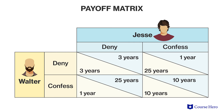The possible outcomes for this game can be shown using a payoff matrix displaying the prisoners' two choices: to deny the charges or cooperate with the police and take the deal. If both Jesse and Walter remain quiet and deny any participation, they will both be charged with having unregistered weapons and will each go to jail for three years. Thus, in the upper left corner of the payoff matrix, both get a payoff of three years in jail.